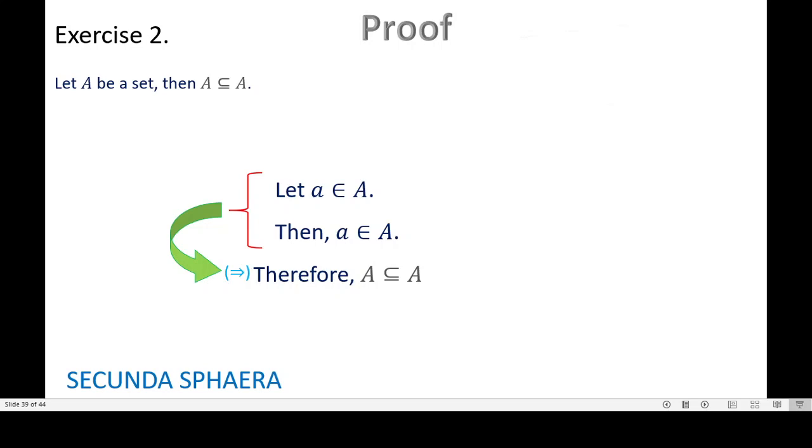And we end up with that general element belonging to some set which was A. So A is contained in A, and this is again showing that our conclusions match. So this is the end of the proof.